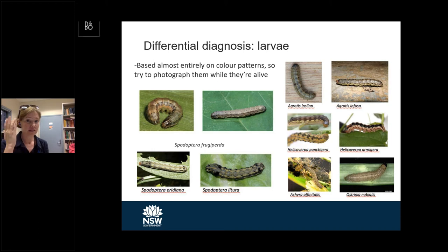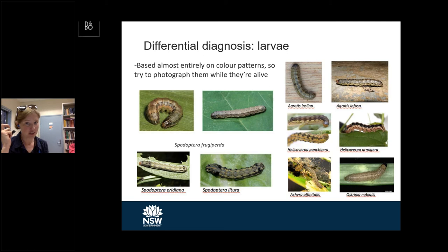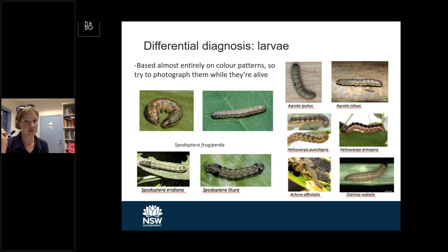Because lepidopteran larvae tend to change color rapidly after they've been killed — they'll shrivel up in ethanol, and if you leave them alive in a jam jar in your car on a hot day they'll turn black and be much harder to identify — we humbly request that you try to take a picture of the larva while it's alive before you kill it. Even if we're going to do a DNA analysis, it's really nice to have a photograph of the color pattern of the live larva.